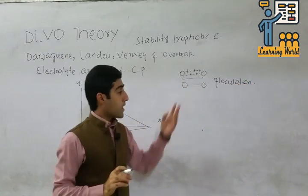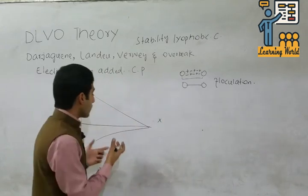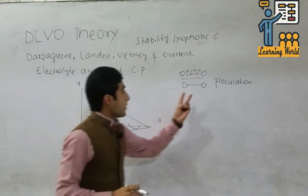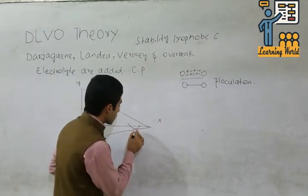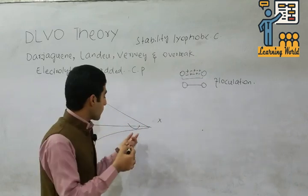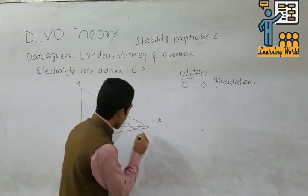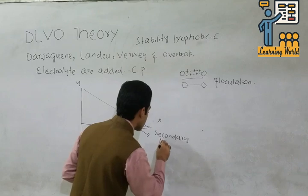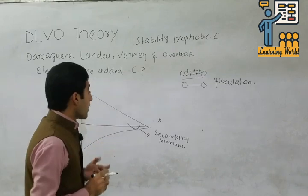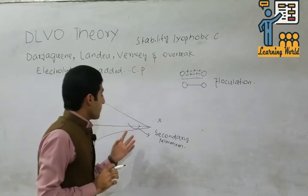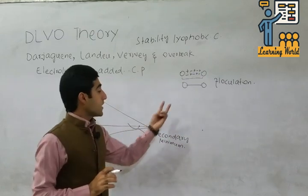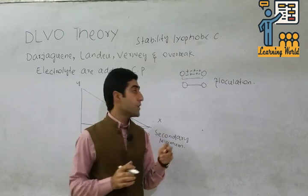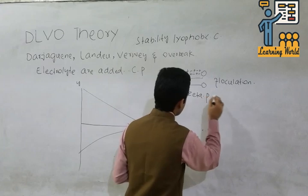Because plug formation occurs, this is the flocculation phenomena. If some electrolyte is added to the particles, the curve will be below the zero point, representing forces of attraction. This point is called the secondary minimum. With the passage of time, the electrolyte will suppress the colloidal particle and bond formation occurs.